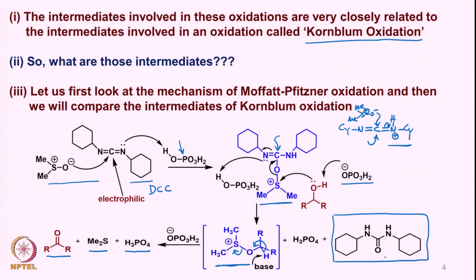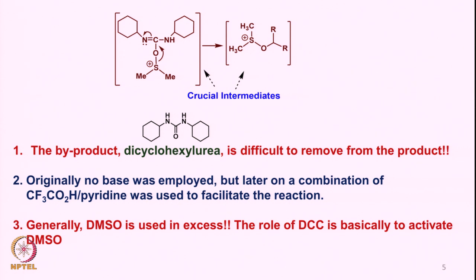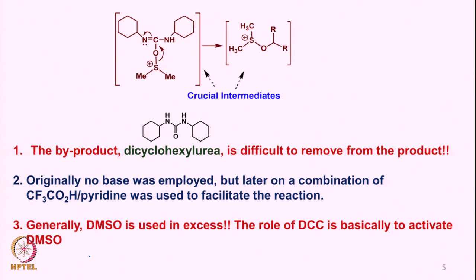The crucial intermediates shown in blue and this particular intermediate are the ones worth considering. What happens during the reaction is that dicyclohexyl urea becomes difficult to remove during purification of the ketone.